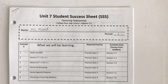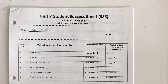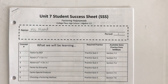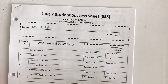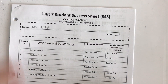Unit 7 is all about factoring polynomials. Unit 6 was all about polynomials — what they're called, how to multiply them, add and subtract. Now we're going to go backwards and talk about how we can take a polynomial and factor it down to the product of two other smaller polynomials. That's the whole point of factoring: to simplify it and make it a product.